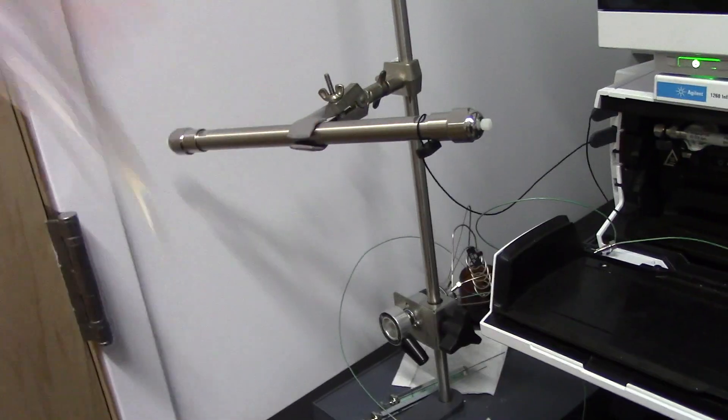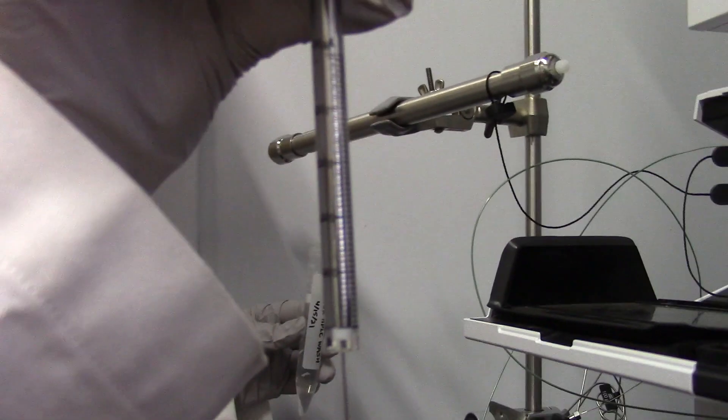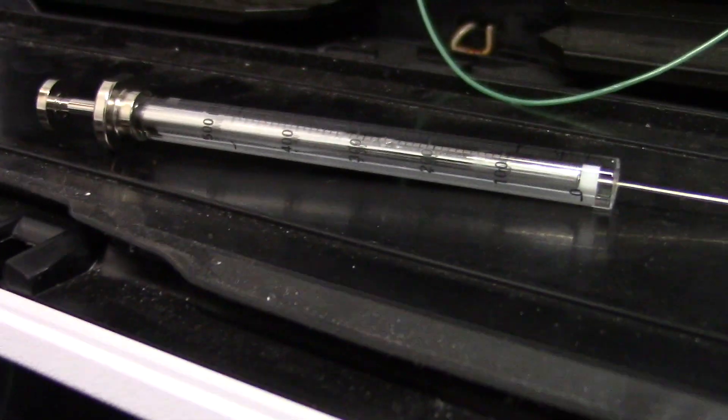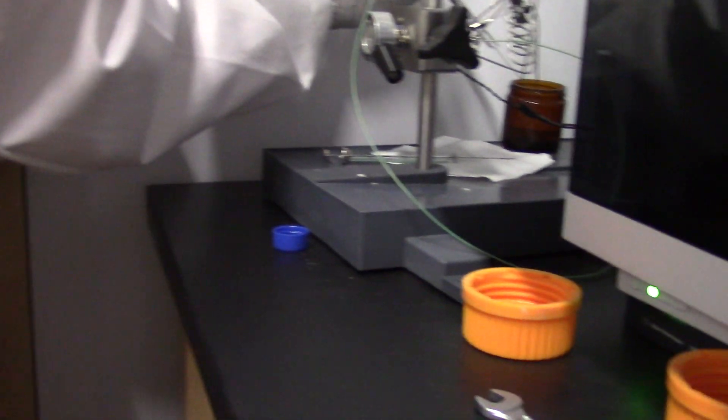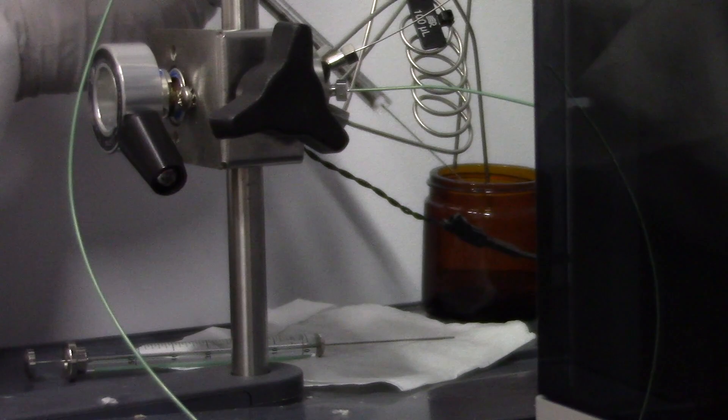The steps to ensure a clean injection is as follows. Obtain a correct syringe size to match the size loop. Uptake some of the plain solvent used in your sample to rinse out the syringe. Displace the solvent in the syringe by releasing it into a waste container.